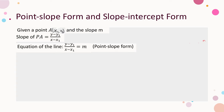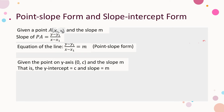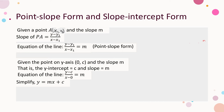Of course, we can also simplify the equation into the general form. Now consider a special case: the given point (0, c) lies on the y-axis and the slope is m. That is, the y-intercept is c and the slope is m. Applying the point-slope form and simplifying, we have y = mx + c. Given the slope m and the y-intercept c, the equation of the line can be obtained directly. This form is called the slope-intercept form.